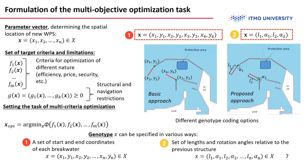The multi-objective optimization task can be formulated with all described objectives and constraints. First, we have a parameter vector that describes the spatial location of the breakwaters, which is optimized during the procedure. We also have a set of target criteria and constraints described as different functions of the parameter vector. Additionally, we have a composite fitness function that should be minimized during the optimization, which depends on all these described functions.